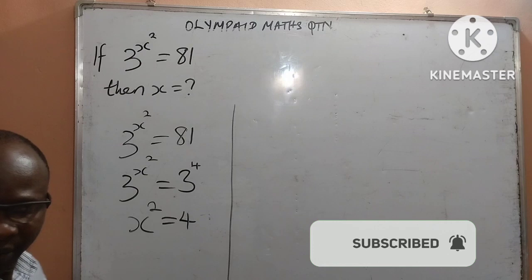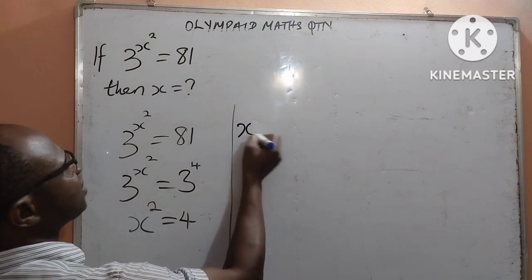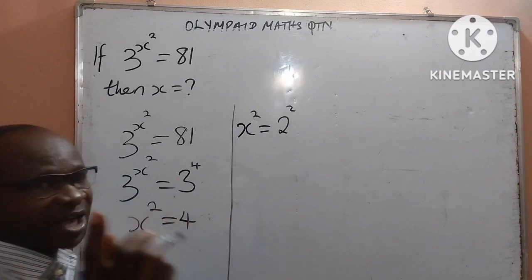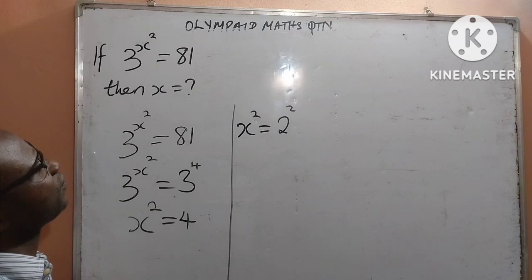Good. The next thing I will do, I want to express this 4 in base 2 as well. And that is going to give me x to the power of 2 equal to 2 to the power of 2. So I have expressed my 4 in base 2, and that is 2 to the power of 2, and that is equal to 4.